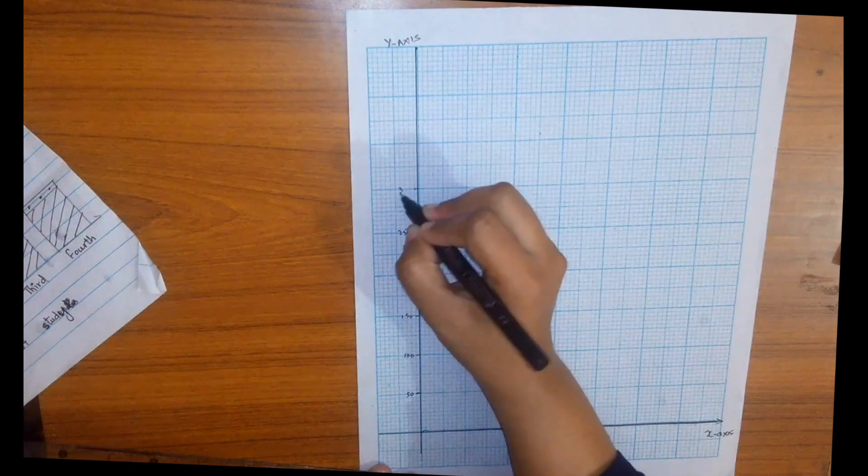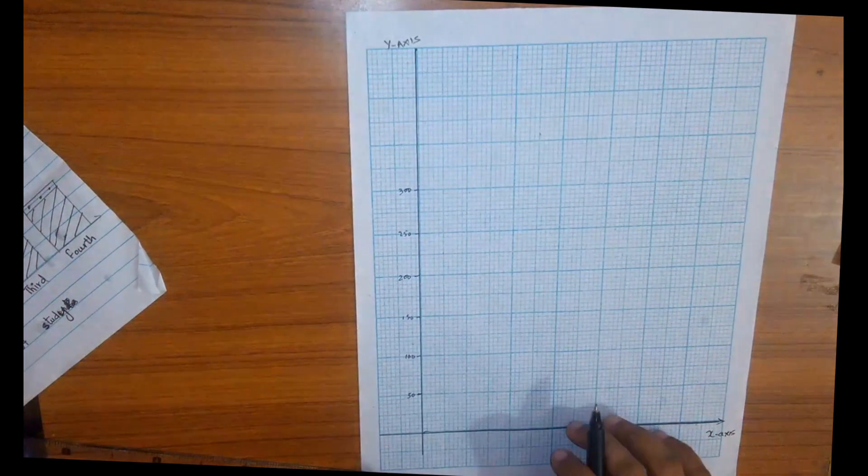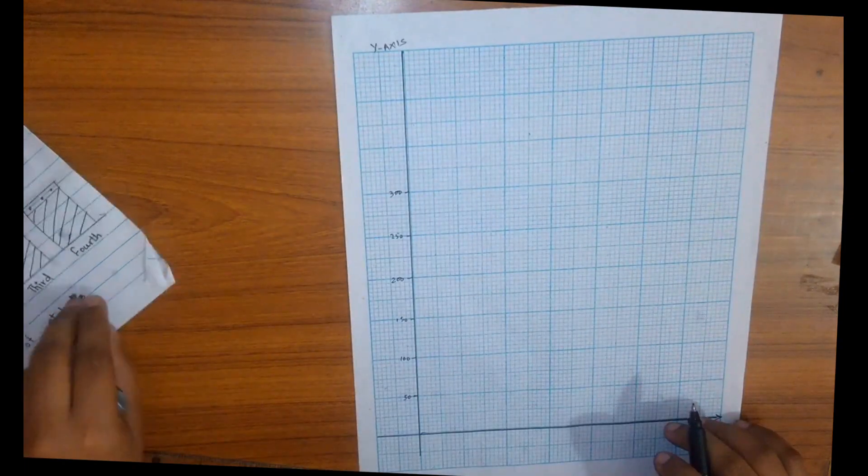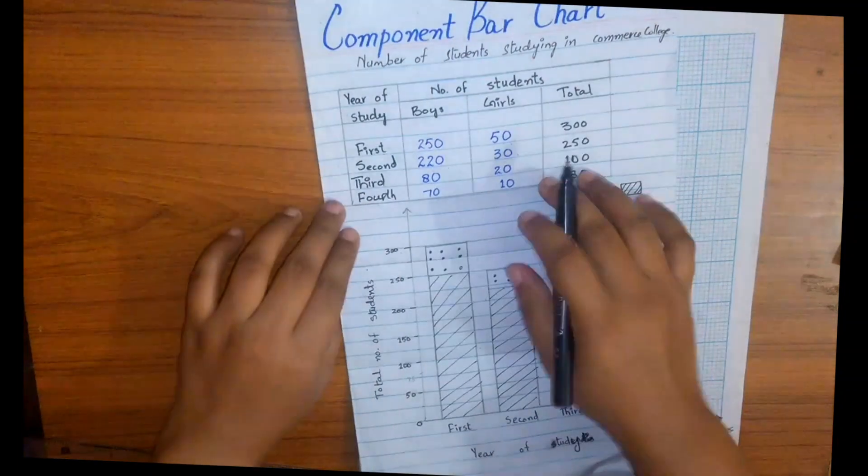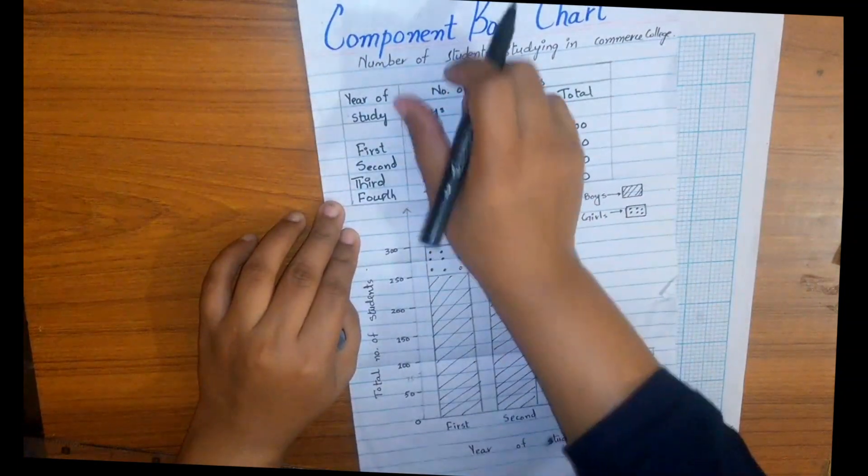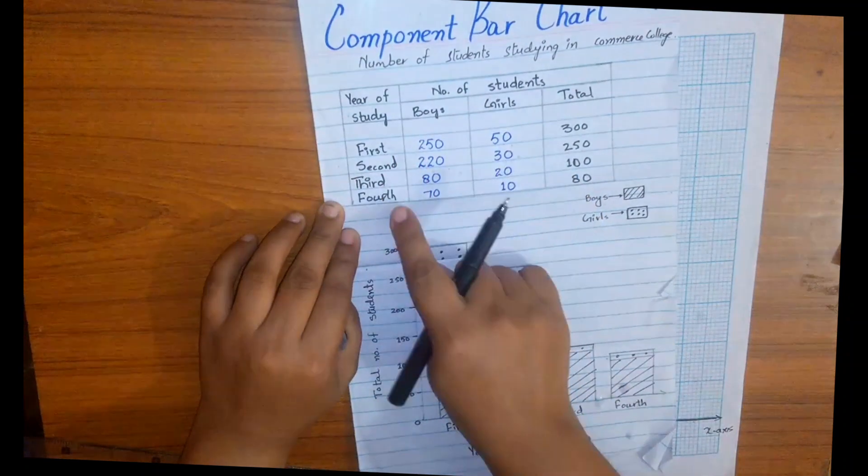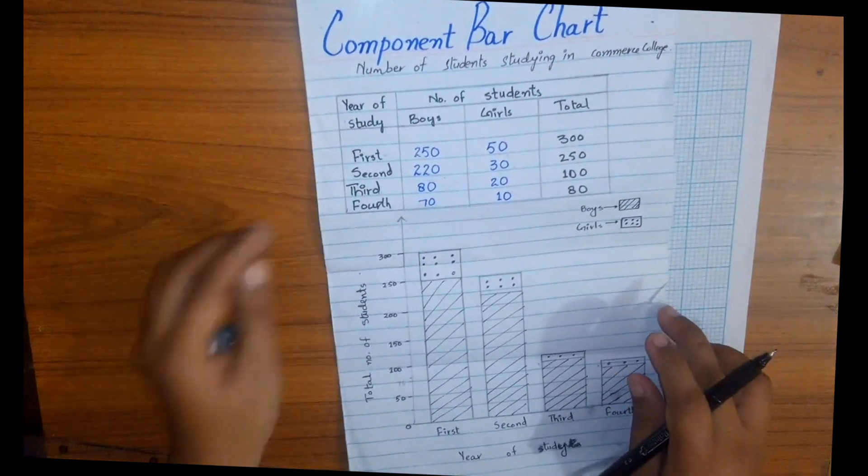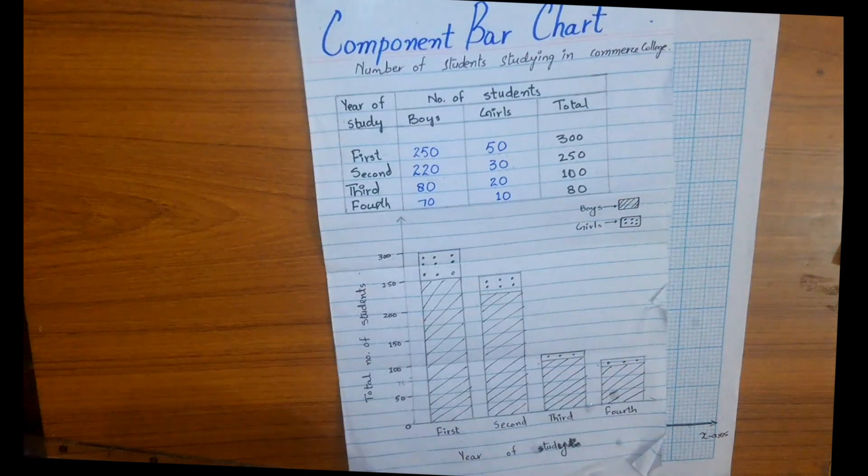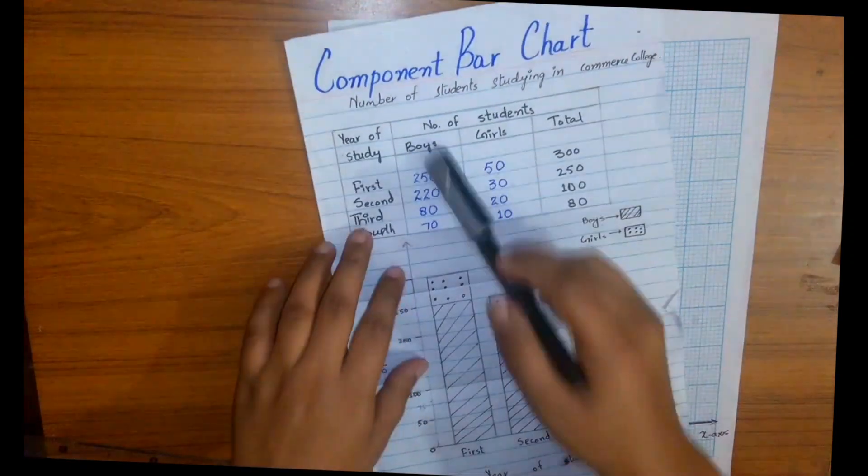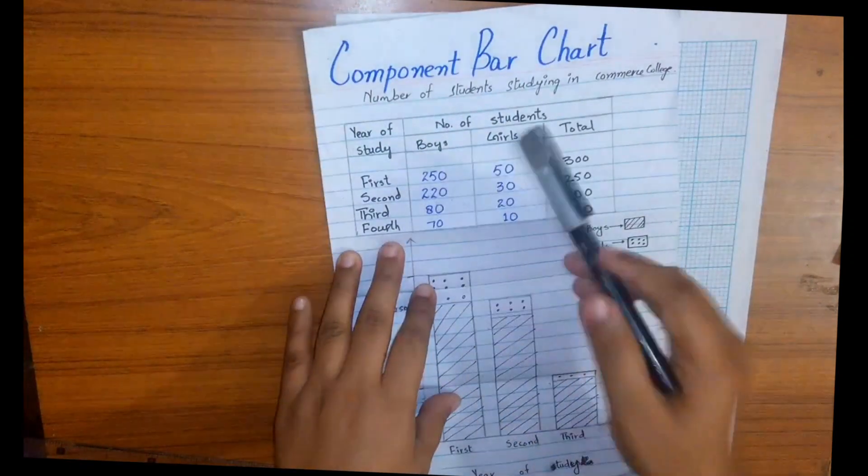On the x-axis we will take groups, or here we have year of studies which is first, second, third, and fourth. Now we are going to construct component bar charts for number of students in different year of studies. We will construct a graph for boys first and then girls.